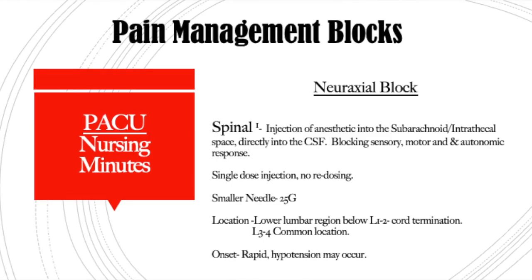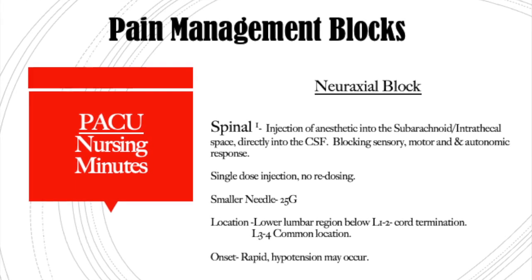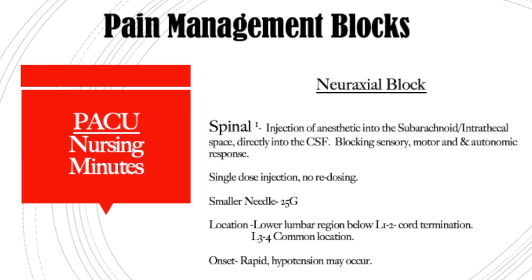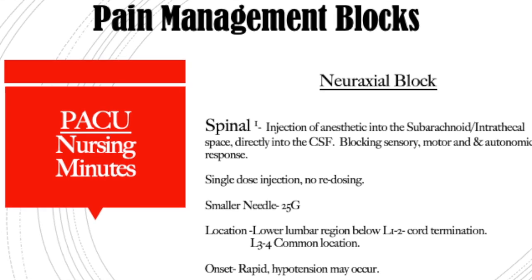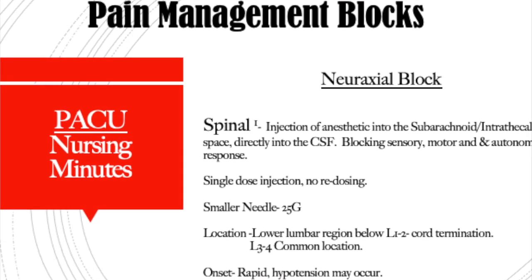The spinal is a single injection done usually around the level of L3-L4 into the subarachnoid space, typically used for elective orthopedic surgeries like hip or knee replacement. There is rapid onset because it blocks the autonomic response, resulting in hypotension, vasodilation, relaxation, and impaired temperature regulation. Phenylephrine is usually the drug of choice to manage that hypotension.